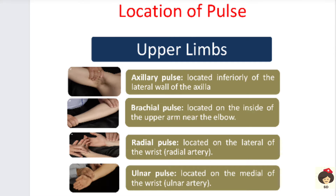In upper limbs you can check the axillary pulse, located inferiorly at the lateral wall of the axilla. The brachial pulse is located inside the upper arm near the elbow, on the medial side near the patient's body. The radial pulse is checked near the wrist on the lateral side, which is far from the body. The ulnar pulse is on the medial area of the same wrist, near the body.